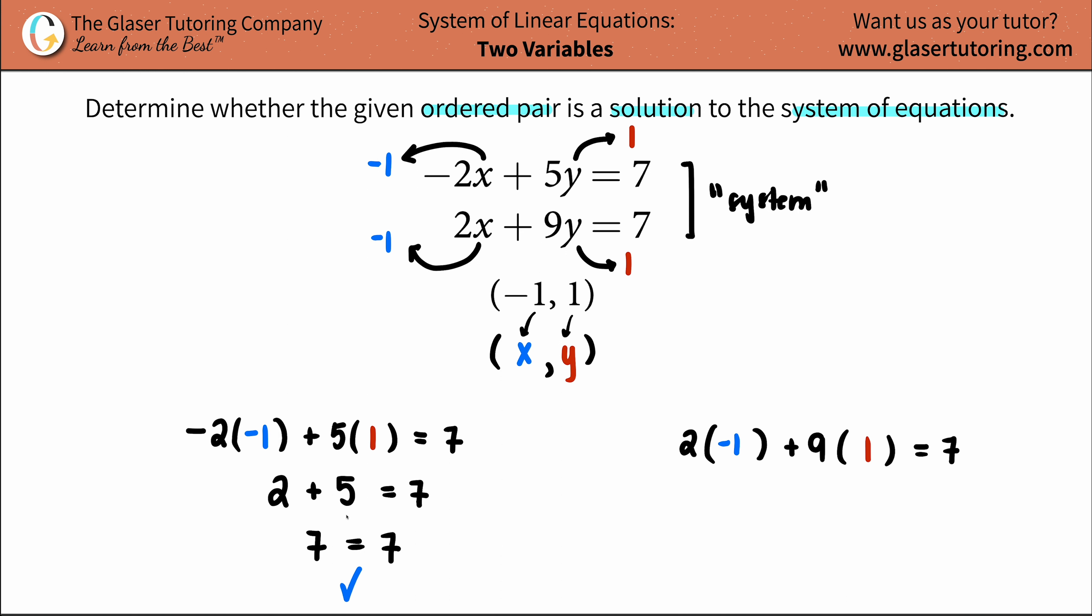And if you get a check for the left equation, in our case the top one, then we should get a check for the other one. Let's see. So we have 2 times a negative 1 is negative 2, plus 9 times 1 is 9. And this should all equal 7. Negative 2 plus 9 is 7.